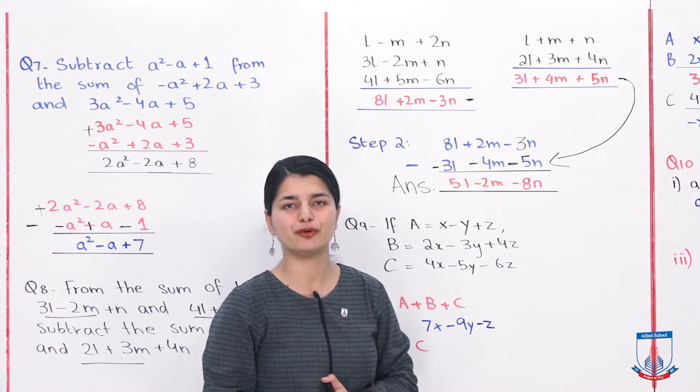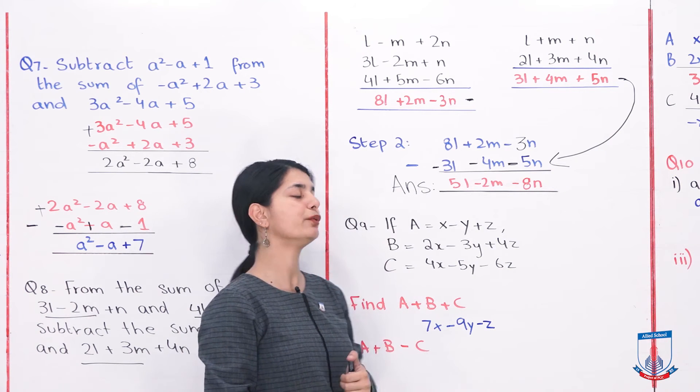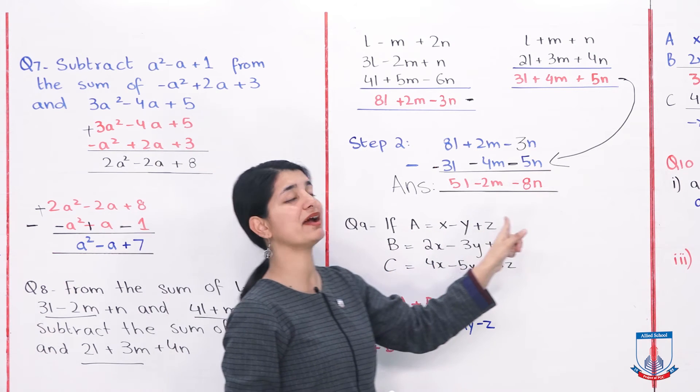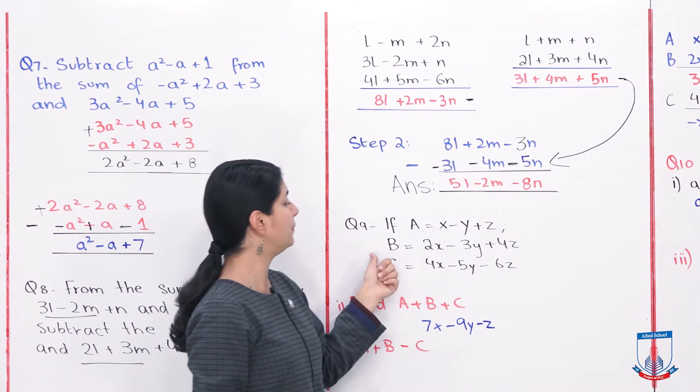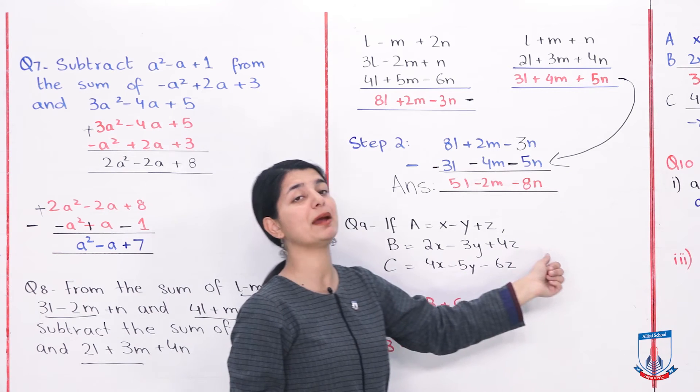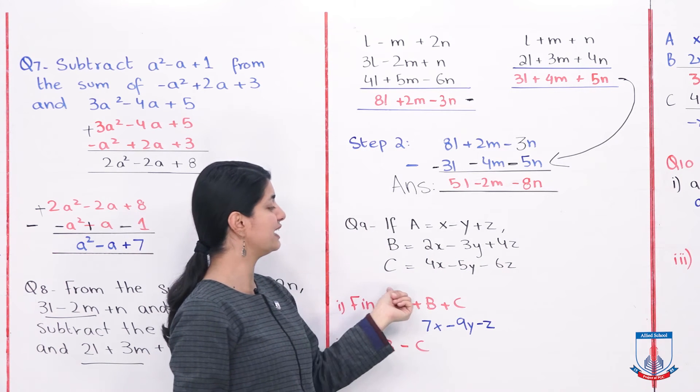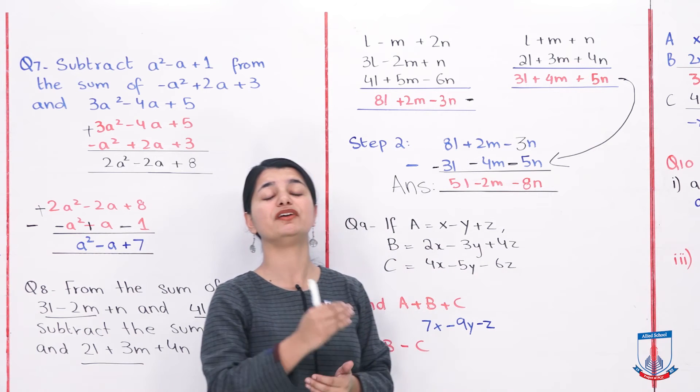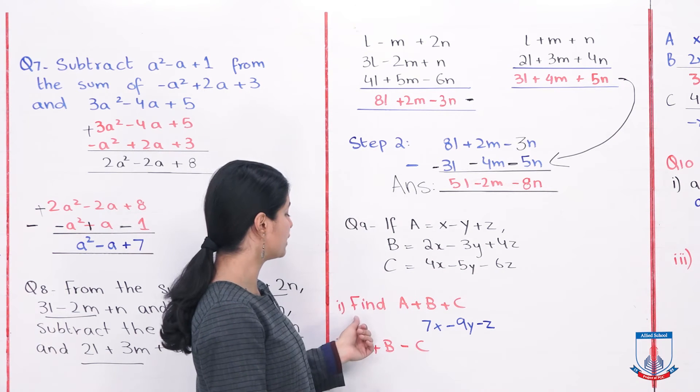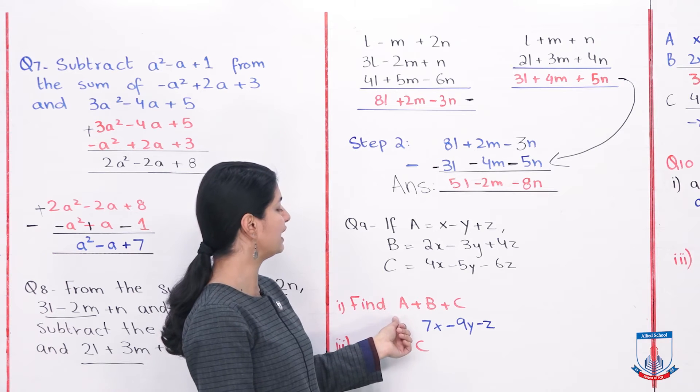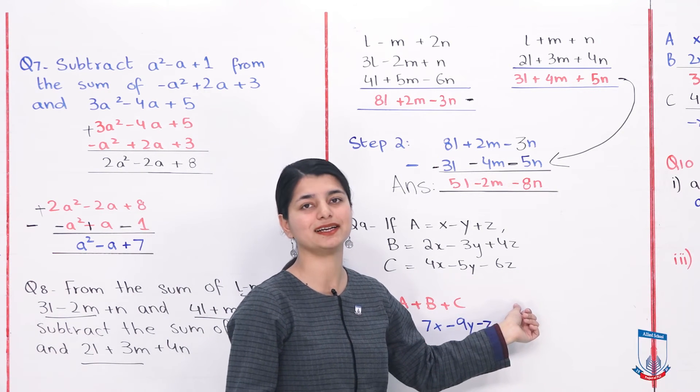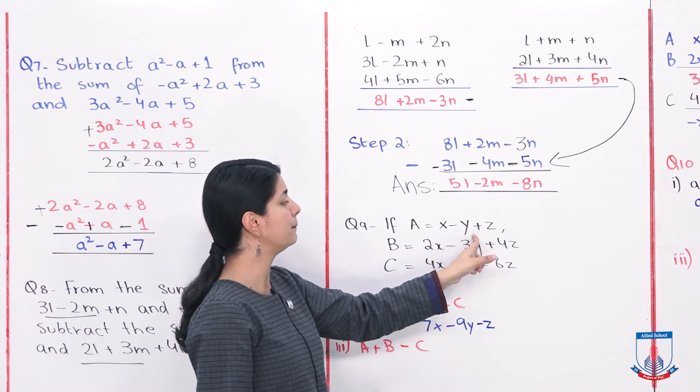With this we have also solved question number 8. Let's look at question number 9. Question number 9 is: if A equals X minus Y plus Z, B equals 2X minus 3Y plus 4Z, and C equals 4X minus 5Y minus 6Z. So they have given you different scenarios to calculate. Like in part 1, find A plus B plus C, so you have to add all three.